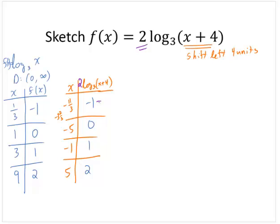so instead of a negative 1, I would have times 2, negative 2. Instead of 0, actually 0 times 2 is still 0, 1 times 2 is 2, and 2 times 2 is 4.